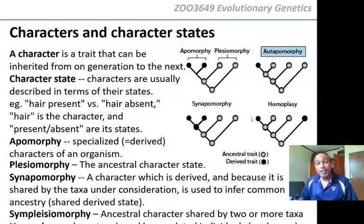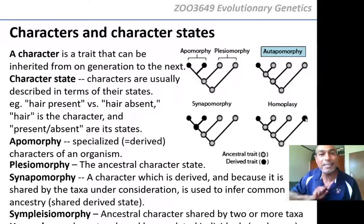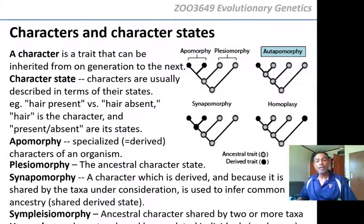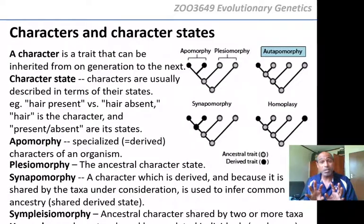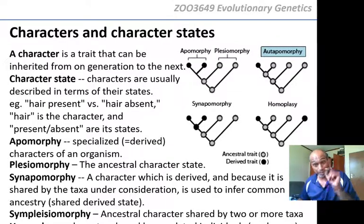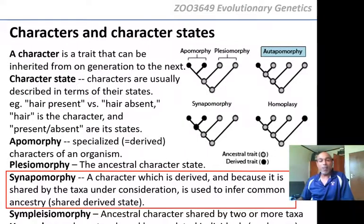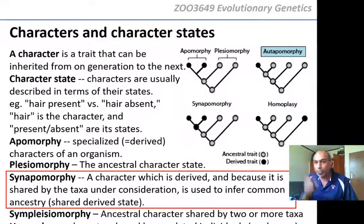Homoplasy tells us that a character evolved twice independently. That is where we bring together convergent evolution, divergent evolution, analogous, homologous, synapomorphy, and homoplasy. You need to understand this — your passing this module depends on it. Synapomorphies are highlighted as the important characters needed to build a tree. Do not build a tree with a homoplasy — it is the same as building a tree with an analogous character, and you will get the wrong tree.